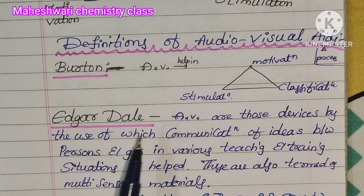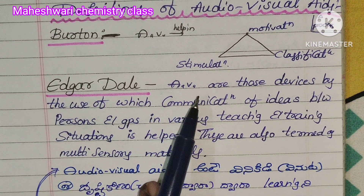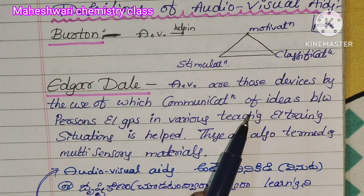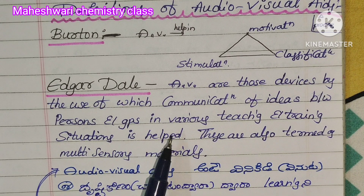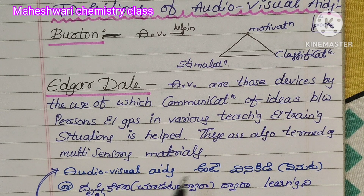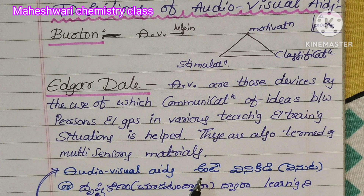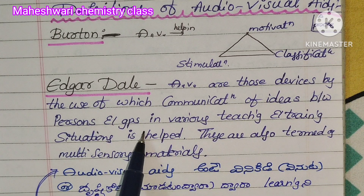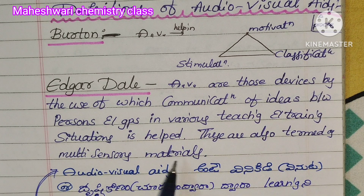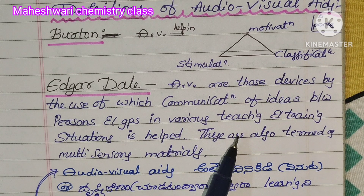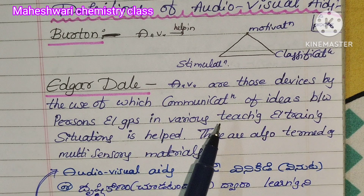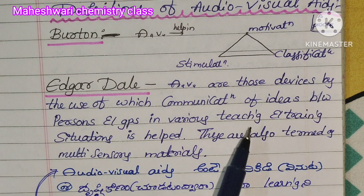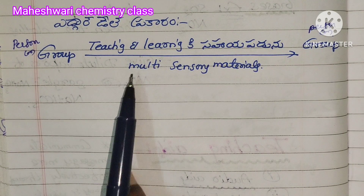Next, Edgar Dale's definition: audio-visual aids are those devices by the use of which communication of ideas between persons and groups in various teaching and training situations is helpful. These are also termed as multi-sensory materials.